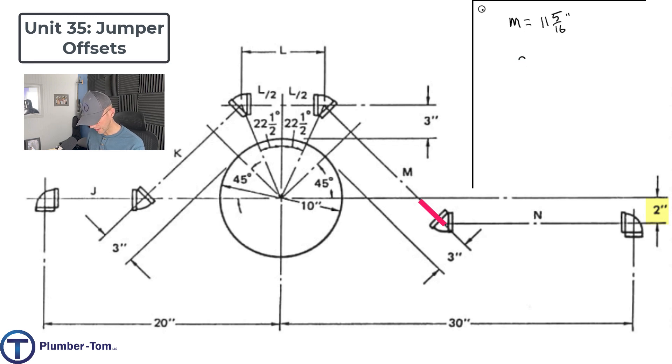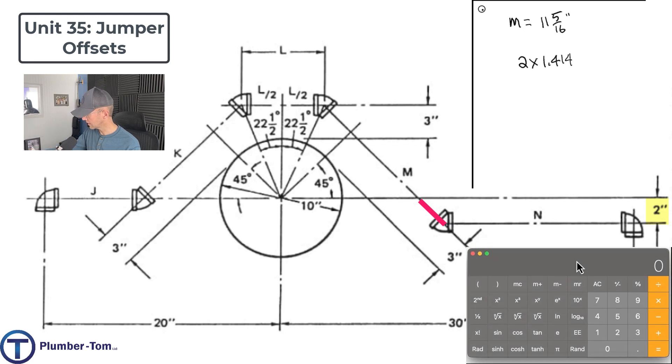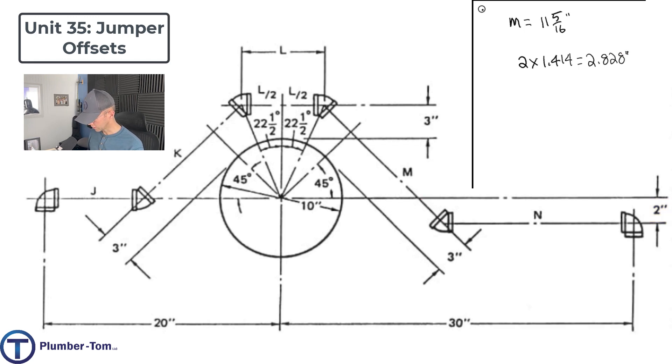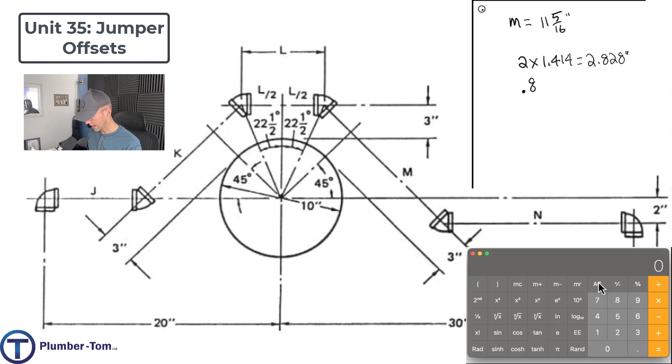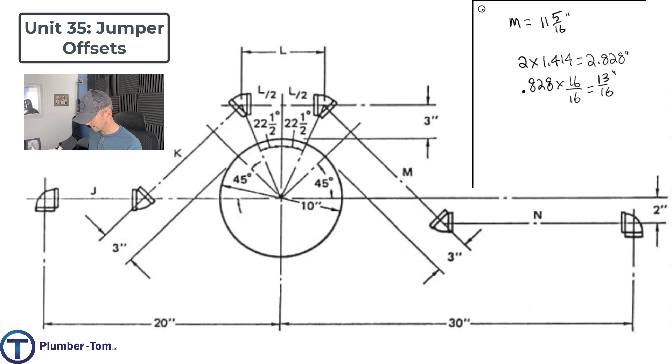And we'll just use our triangle math, right? To figure that out, we would take 2 times 1.414. Let's pull that up here. 2 times 1.414 is going to give us 2.828 inches. Now let's convert that over into our fractions. 0.828 times 16 over 16. That's going to give us 13. And it's a little bit more, but we're going to leave it at 13 sixteenths. So basically, what we need to add to that is 2 and 13 sixteenths. That's going to give us M.